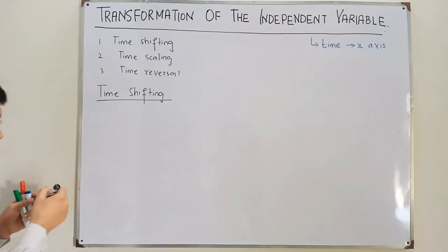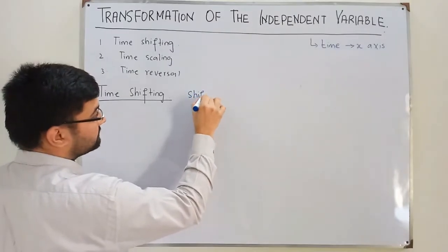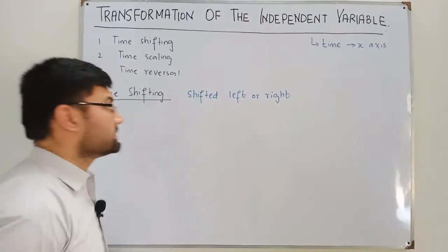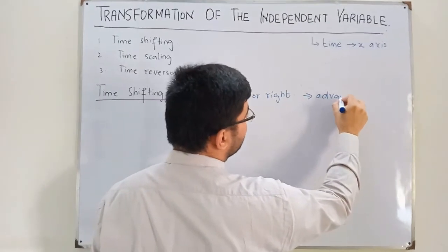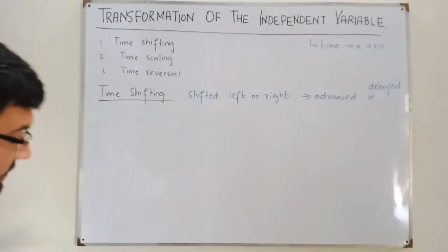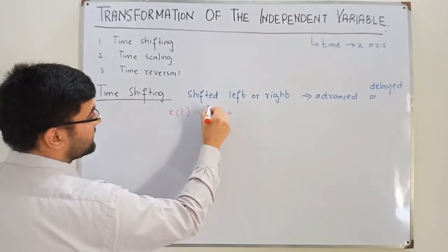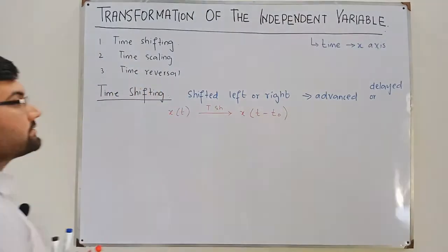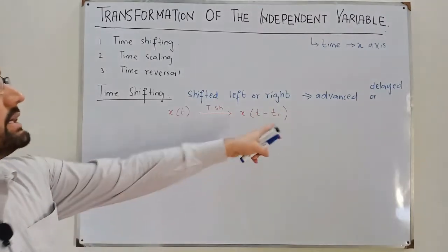Now time shifting — as the name suggests, the signal would be shifted either towards the left or towards the right along the axis. This means the signal would either be advanced or delayed. If we have a signal x(t) and we apply time shifting, we get a new signal x(t − t₀).